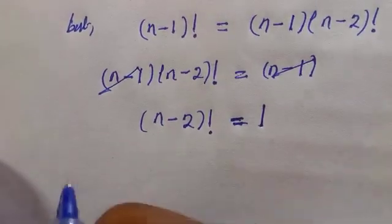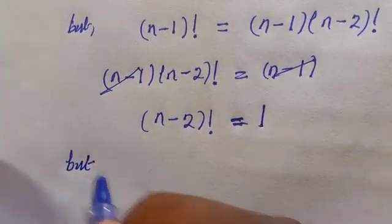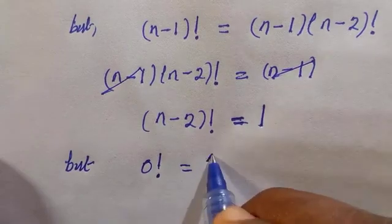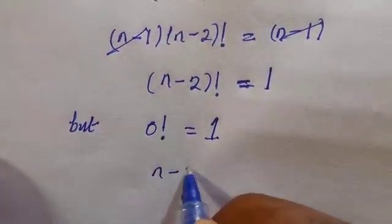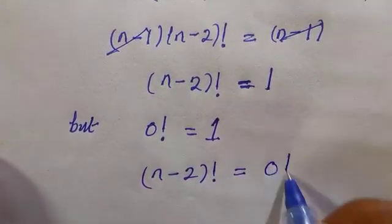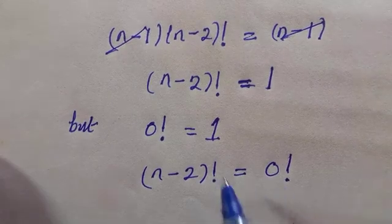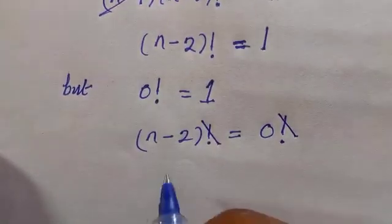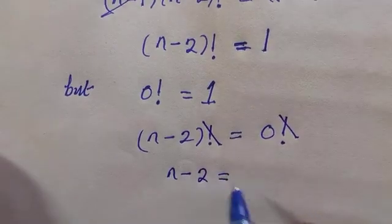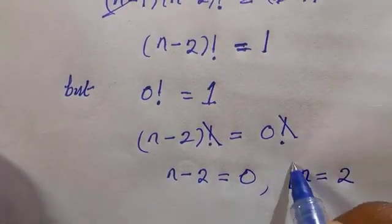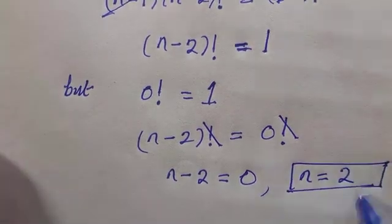We know that 0 factorial equals 1, so we replace: (n minus 2) factorial equals 0 factorial. Eliminating the factorials gives n minus 2 equals 0, therefore n equals 2. This is the solution from method one.